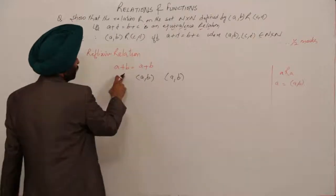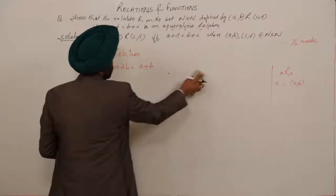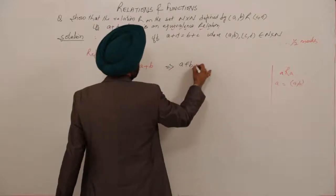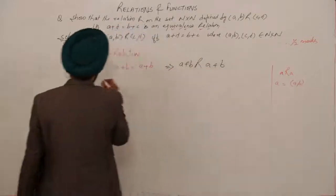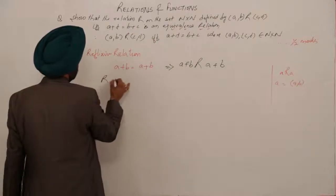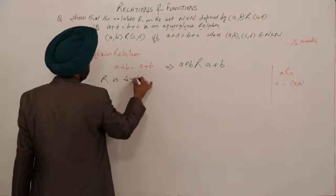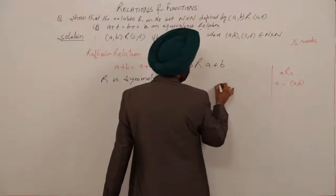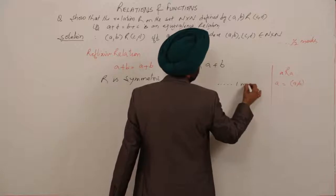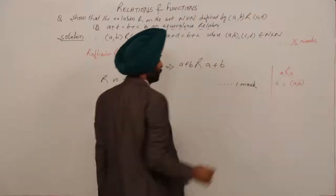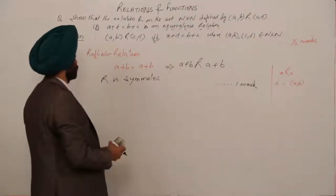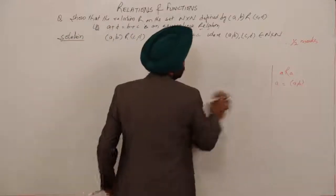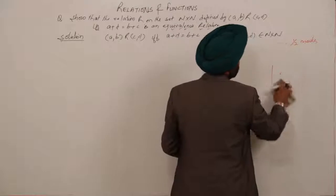Therefore, the reflexive relation holds — (a,b) R (a,b) since a+b = a+b. Reflexive is done, and you will receive one mark for this part. Now let's move with the second part: the symmetric part.